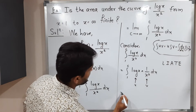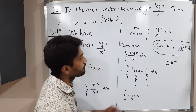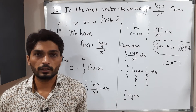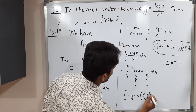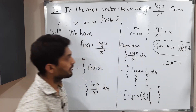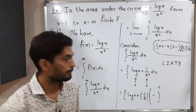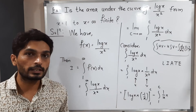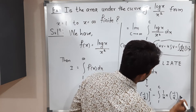Applying the formula: u as it is, log(x), times the integration of v. The integral of 1/x² is −1/x, with limits 1 to c. Then minus the integral from 1 to c of the derivative of u times the integral of v. The derivative of log(x) is 1/x, and the integral of 1/x² is −1/x. So we have: log(x)·(−1/x) from 1 to c, minus the integral from 1 to c of (1/x)·(−1/x) dx.